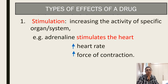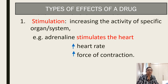There are various types of effects of the drug. First of all is stimulation — one kind of effect of the drug. It increases the activity of the specific organ or system. Like adrenaline stimulates the heart, causing increased heart rate and force of conduction.